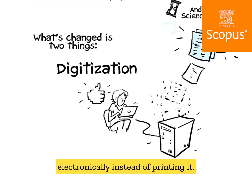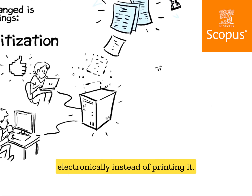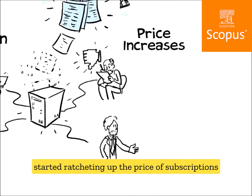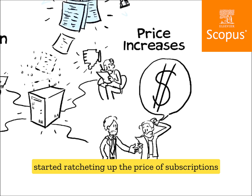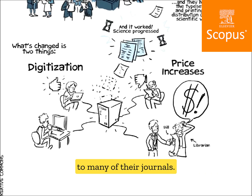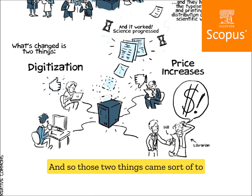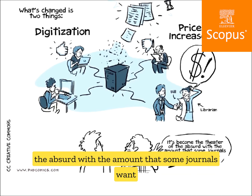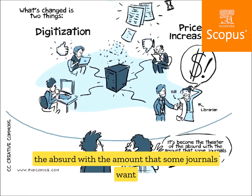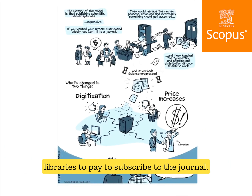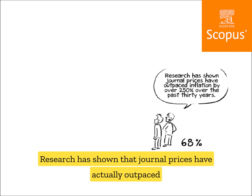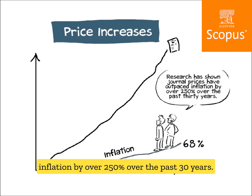What's changed is really two things: first, digitization — you can now do everything electronically instead of printing. Second, journals started ratcheting up the price of subscriptions. Those two things came to a head where it's become almost the theater of the absurd with the amount that some journals want libraries to pay.